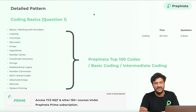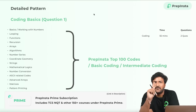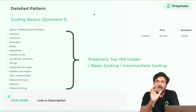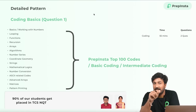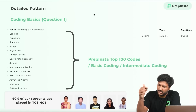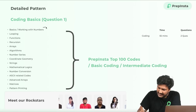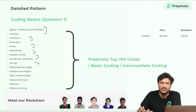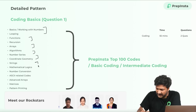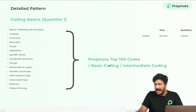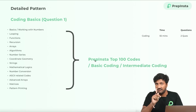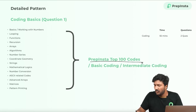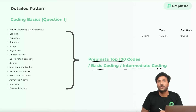Now let's talk about coding. The first coding question won't be easy, but a good programmer should be able to solve it in about 20 minutes. The topics include basics of numbers, looping, functions, recursion, arrays, and number series. We've made a YouTube video discussing the previous year question — you'll find it here. Take a screenshot of the syllabus shown.